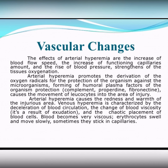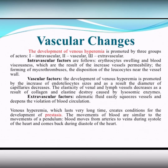The next vascular change after arterial hyperemia is venous hyperemia. It is characterized by the deceleration of blood circulation. The change of blood viscosity is the result of exudation and the chaotic placement of blood cells. Blood becomes very viscous; erythrocytes swell and move slowly, sometimes sticking in capillaries. The development of venous hyperemia is promoted by three groups of factors: intravascular, vascular, and extravascular.